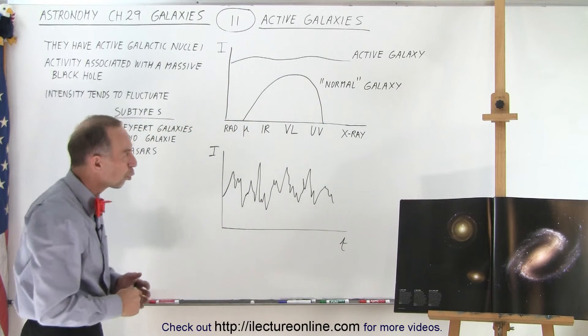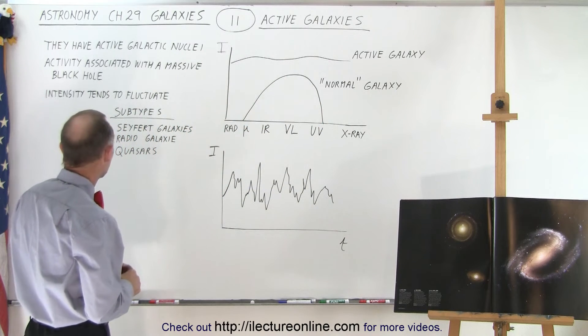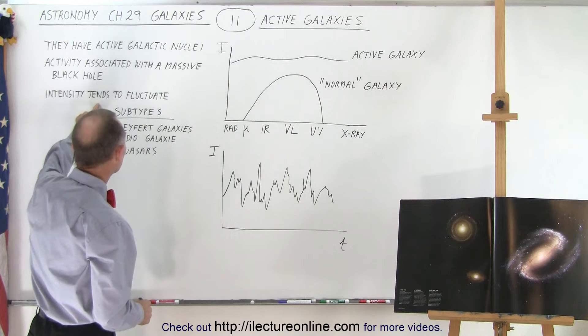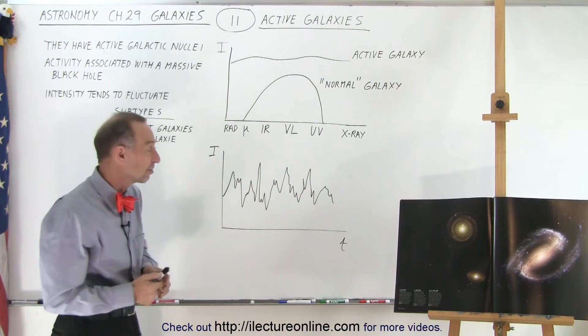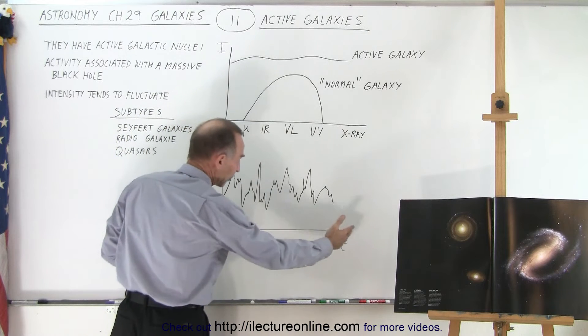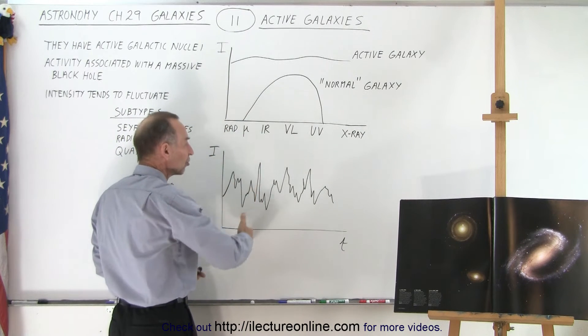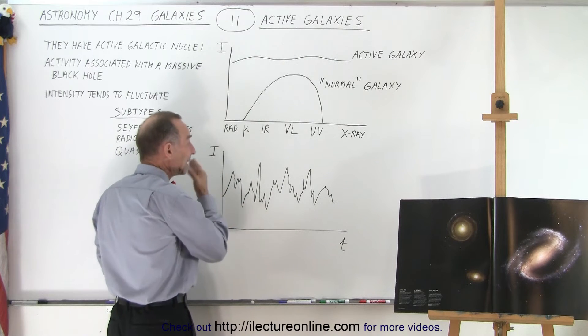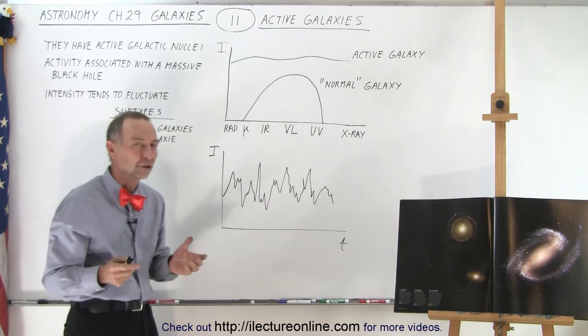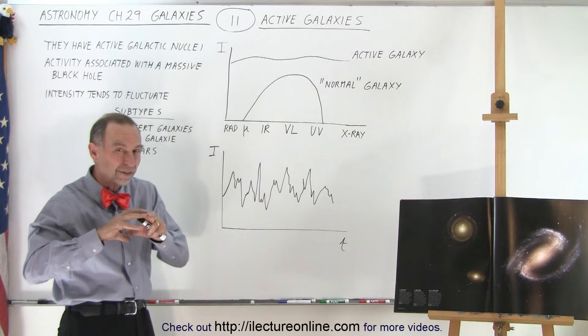Also, what we find is that the intensity tends to fluctuate over time. Here's an example of a galaxy that over a time period of maybe 20 years, you can see there have been continuous, drastic changes in the intensity coming from the radiation.